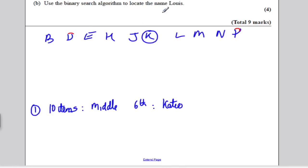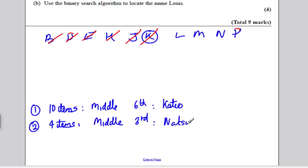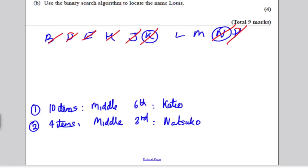Now Louis would be after Katie, so you cross off Katie and everyone before her. And then you've got yourself four items. The middle is therefore the third, which would be the person beginning with N, which is Natsuko. So you highlight the N and you know that Louis should be before that, so you cross off Natsuko and anyone after her.